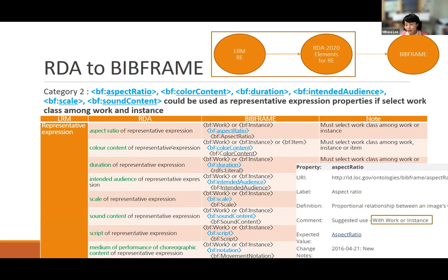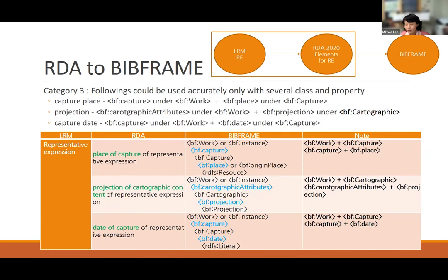The second category covers properties that could be used as representative expression properties under a condition — specifically if the Work class is selected. For example, aspect ratio has a comment that it is used with Work or Instance, so if you describe aspect ratio under the Work class, that is a small limitation. The third category is very difficult — I tried to find the class and properties. For example, capture place is a property under Work, but under Work, capture has another capture class, and under that capture class there is a place, which is the right place for the place of capture of representative expression.